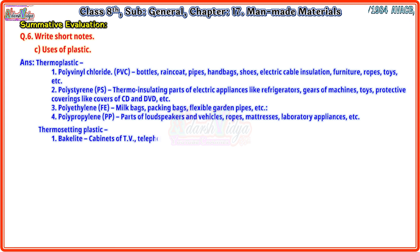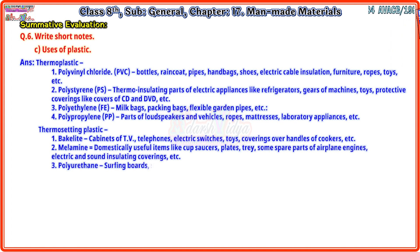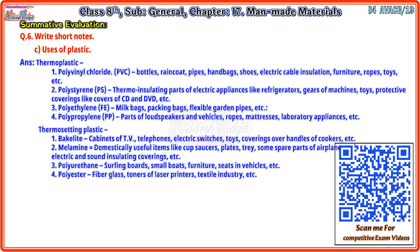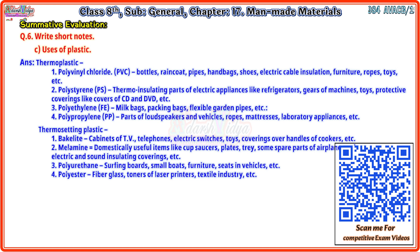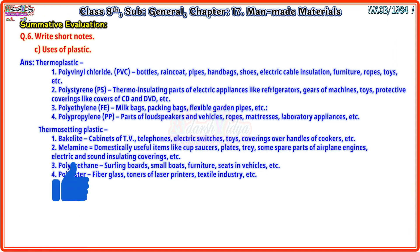Thermosetting plastic uses: (1) Bakelite: cabinets of TV, telephones, electric switches, toys, coverings over handles of cookers, etc. (2) Melamine: domestically useful items like cups, saucers, plates, trays, some spare parts of airplane engines, electric and sound insulating coverings, etc. (3) Polyurethane: surfing boards, small boats, furniture, seats and vehicles, etc. (4) Polyester/fiberglass: toners of laser printers, textile industry, etc.